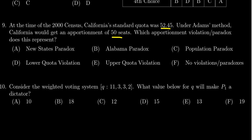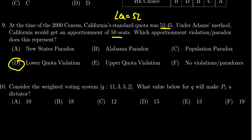So which apportionment violation or paradox is this? Notice that 50 seats is smaller than 52 — 52 would be the lower quota for California. Since this apportionment method gives 50 seats to California, that would be an example of a lower quota violation. Be aware that in the year 2000, the apportionment was done by the Huntington-Hill method, not by Adams method.